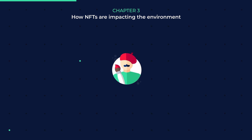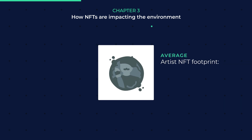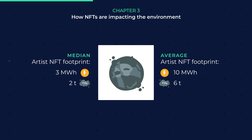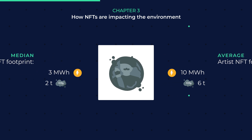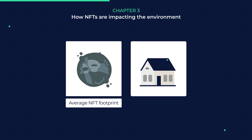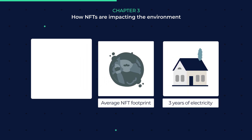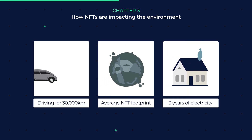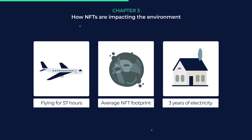On SuperRare, the average footprint of an artist's NFT is 10 MWh, 6 ton CO2, whereas the median is 3 MWh, 2 ton CO2. That makes the average NFT footprint equivalent to a European resident's electricity consumption for three years, or driving for 30,000 km in a petrol-fed car, or taking a flight for 57 hours straight.